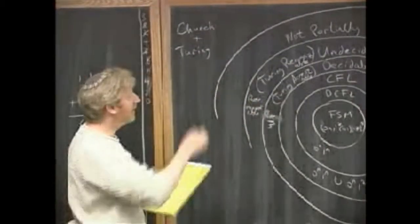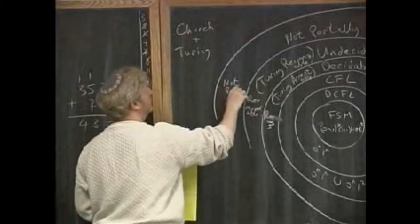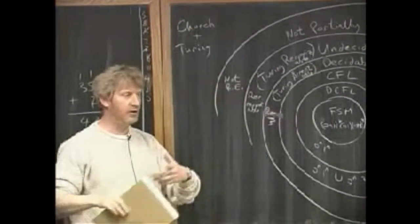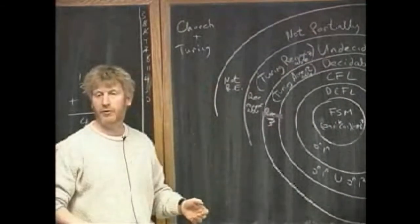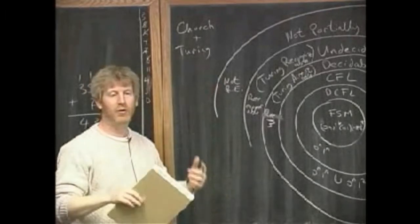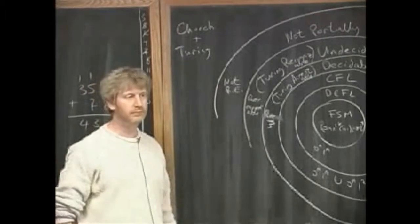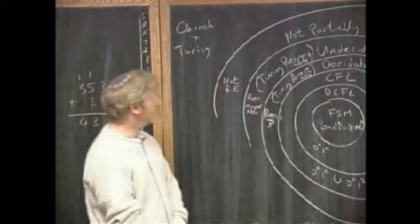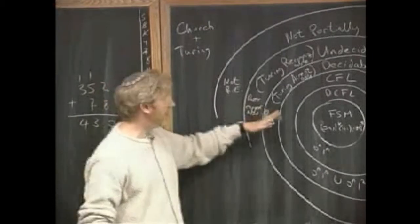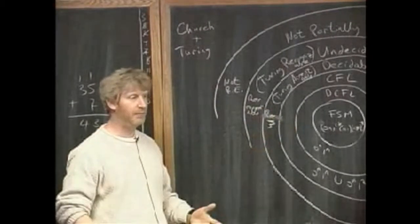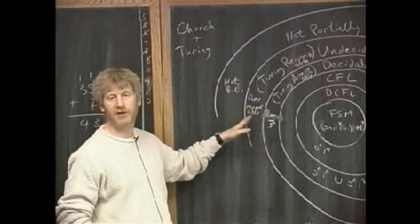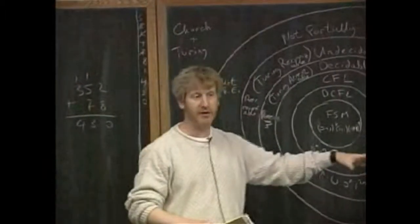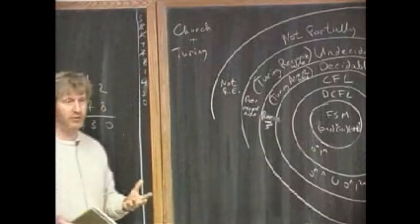Anything out here that is not partially decidable is called not recursively enumerable. The set of all pairs of strings that do not have a post-correspondence solution are not recursively enumerable — there is no way you can take one of those inputs and guarantee to say yes when the answer is there's no sequence. Part of what we're going to be doing in the next week is talking about Turing machines, what they really are, doing real examples, and talking about how you come up with problems that are undecidable.